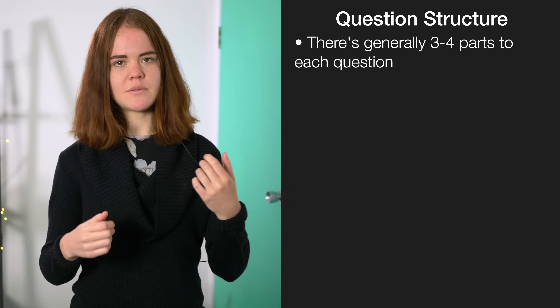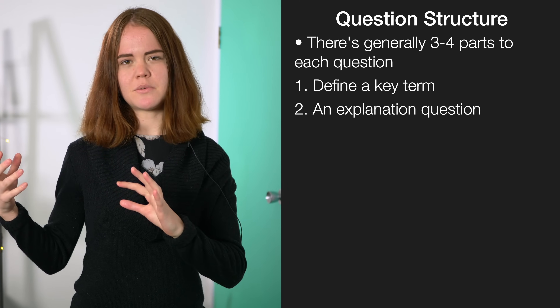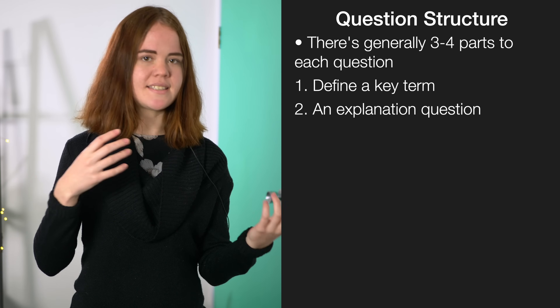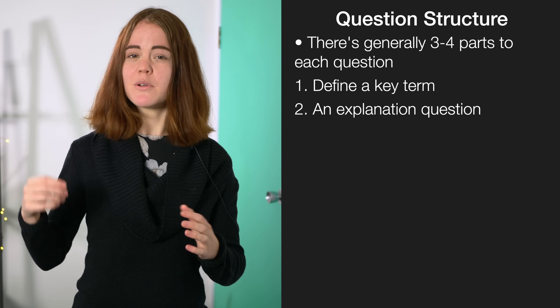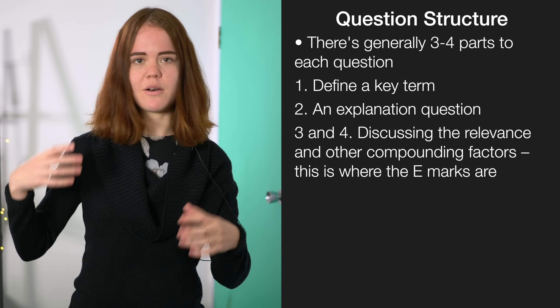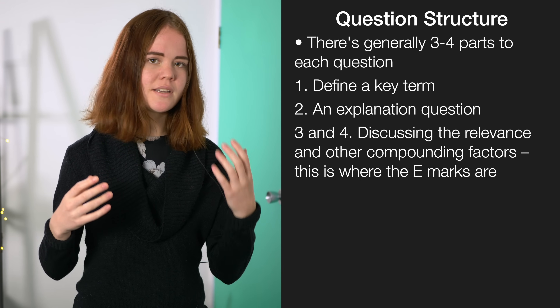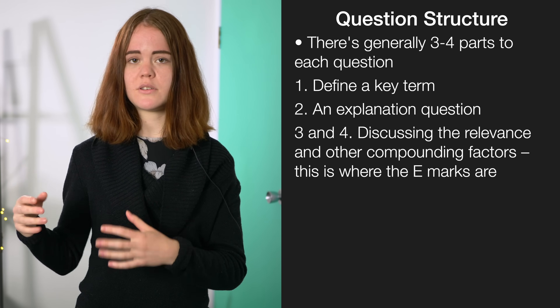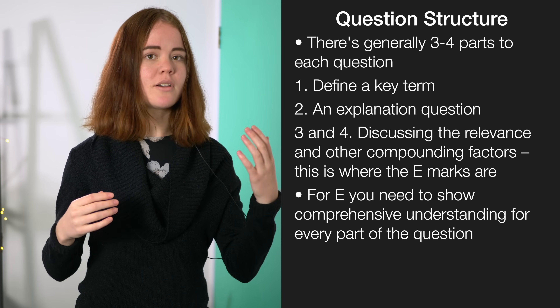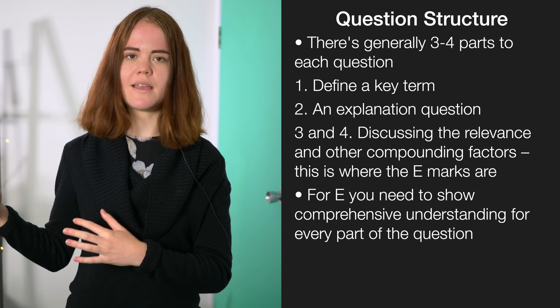If you're aiming for Excellence grades, it's really important to understand how questions are generally structured in the exam. Generally there'll be about three to four bullet points. The first will ask you to define a key term — more of an Achieved skill. The second will be an explanation question, asking you to relate your definition to the context in front of you, which can get you up to Merit. The third and fourth will be about discussing how a bunch of factors play into it — that's when you get Excellence marks. If there are multiple discussion points, answer all of them to equal quality, because Excellence answers need to show comprehensive understanding of every single part of the question.